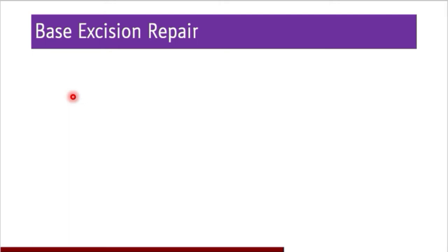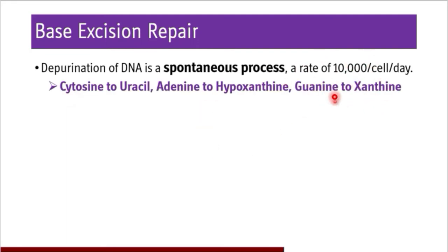Now coming to base excision repair. The nitrogenous base will be repaired. Why is base excision repair required? Depurination of DNA is a spontaneous process, continuously happening at a rate of around 10,000 events per cell per day. Cytosine to uracil, adenine to hypoxanthine, and guanine to xanthine are the usual spontaneous processes — this is depurination of DNA.